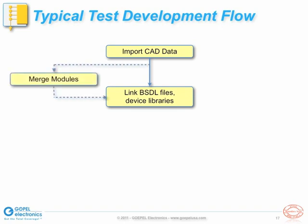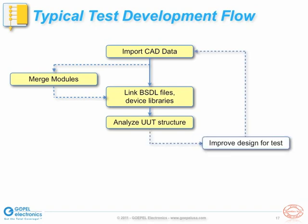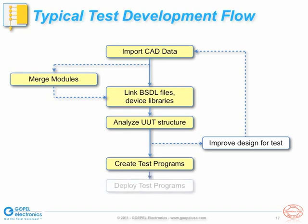In some cases, the UUT may be comprised of multiple modules. The netlist for each module would be imported and the modules would then be merged together. When analyzing the UUT structure, one may identify certain parts of the UUT circuitry that would benefit from redesign in order to improve overall test coverage with boundary scan or other test methodologies. In case of a redesign, the new CAD data would be imported and analyzed. Once we are satisfied with the design for test, we create the boundary scan tests, verify them, and eventually deploy them for prototype verification or manufacturing tests, for example.